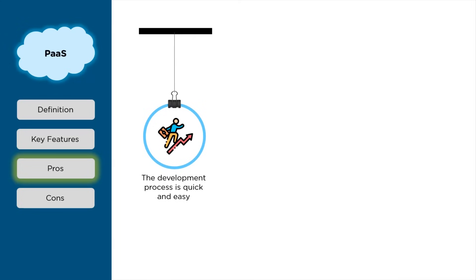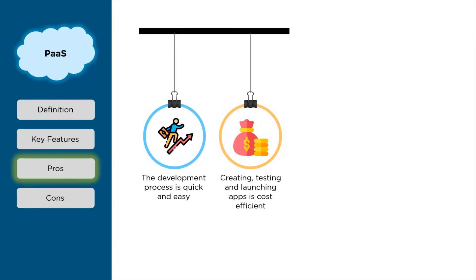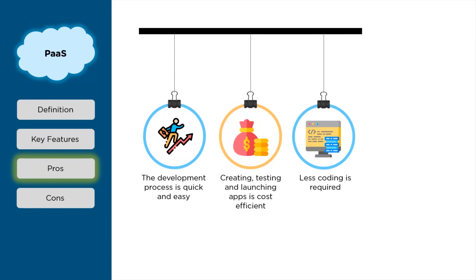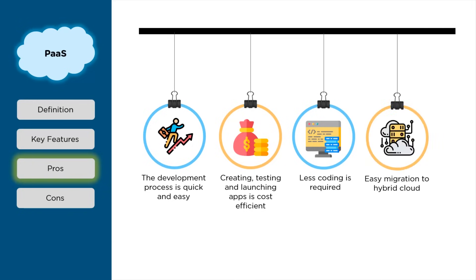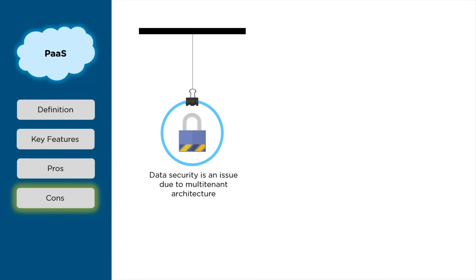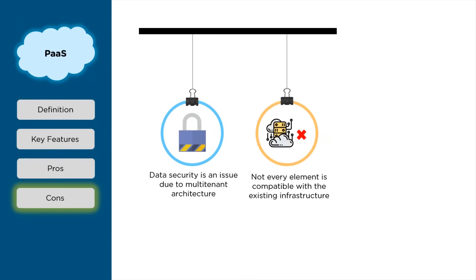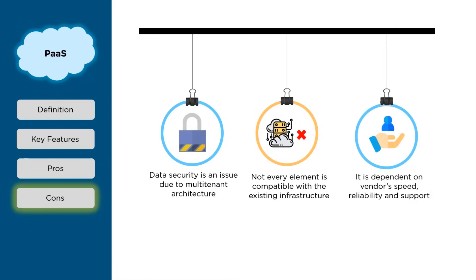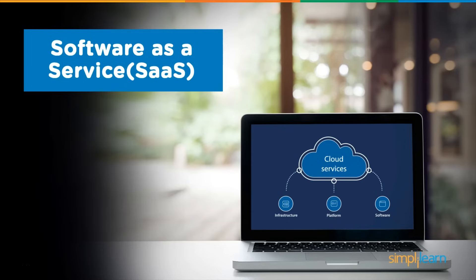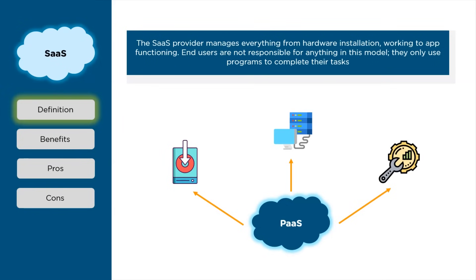Pros of PaaS: the development process is quick and easy as it is a developer programming platform; it is cost-efficient — you pay for only the services you use; less coding is required since coding frameworks are provided by the developer platform; and migration to hybrid cloud is very easy. Cons of PaaS: data security is an issue due to multi-tenant architecture; there is a compatibility issue with existing infrastructure; and PaaS is dependent on the vendor's speed, reliability, and support.